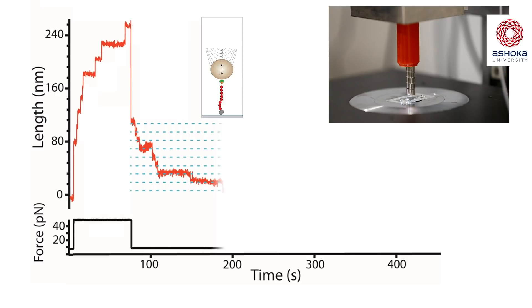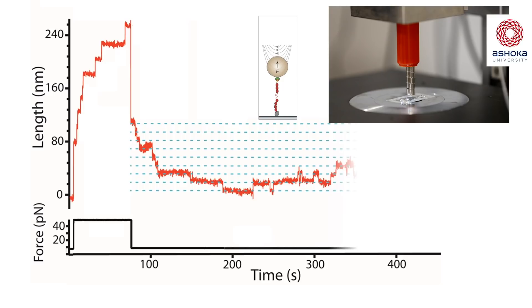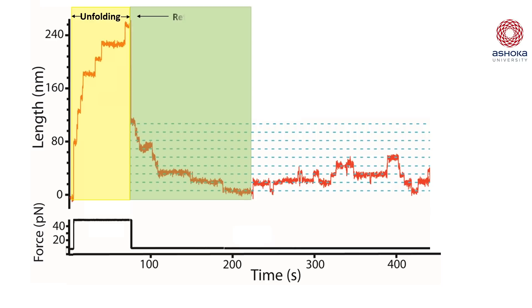In this force range, we see the proteins hopping between the folded and unfolded states, giving us data about the equilibrium. With the covalent magnetic tweezer, you can assess unfolding kinetics, refolding kinetics, and equilibrium on the same plot with a single protein.